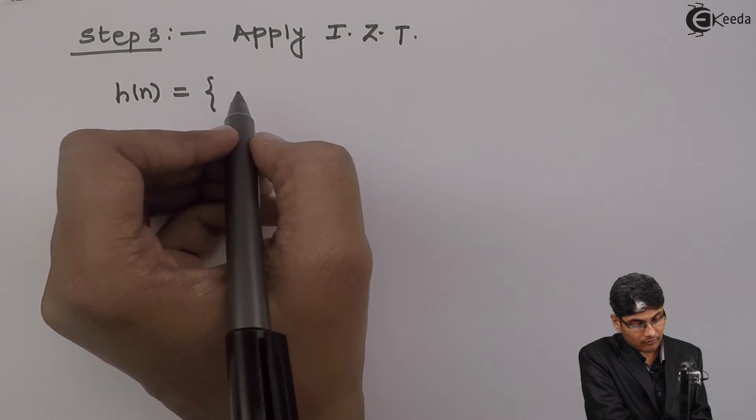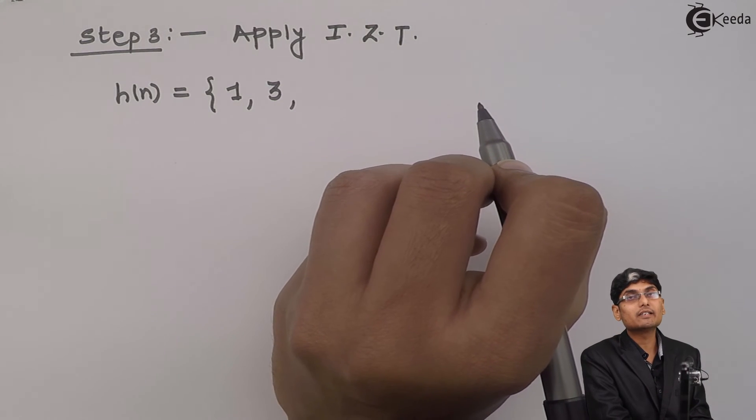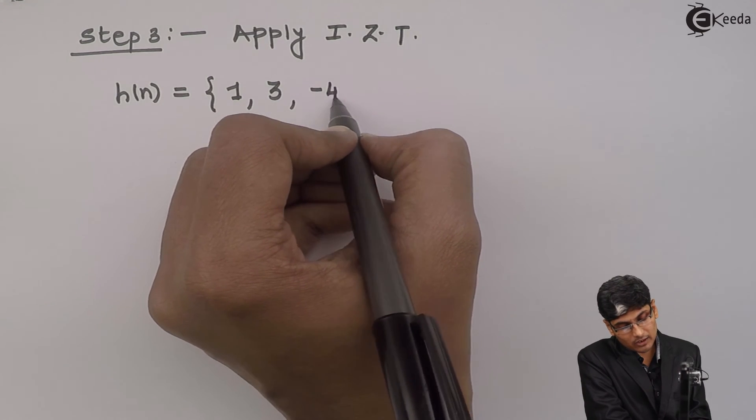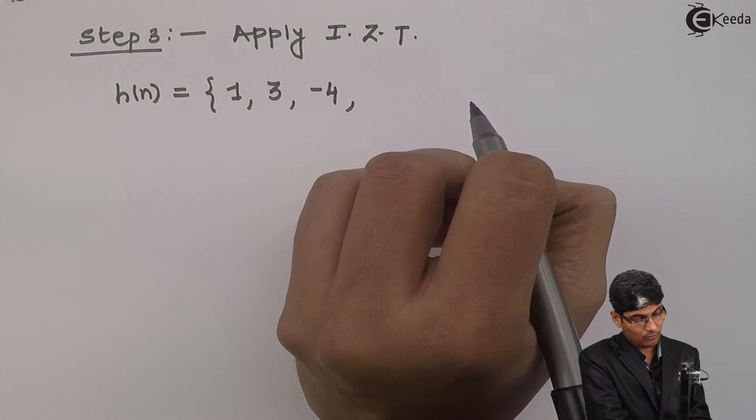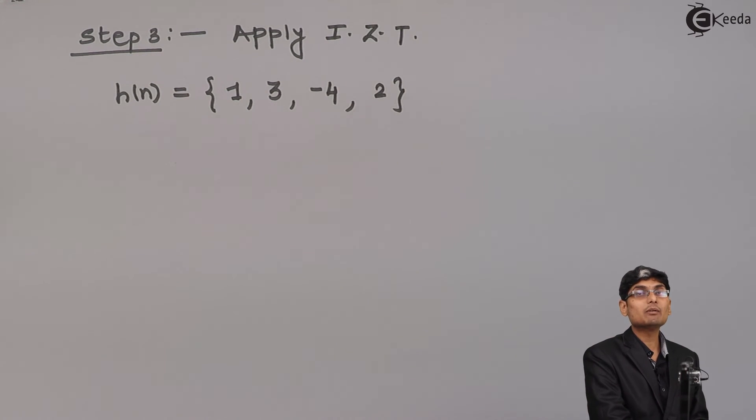So, for the set, it will be 1. Then the next coefficient is z inverse which is 3. Then z raised to minus 2, it is minus 4. z raised to minus 3 is 2. So, this is my impulse response.